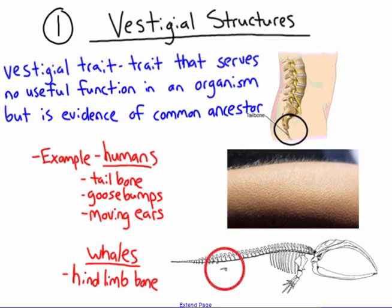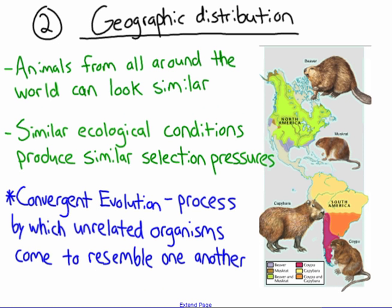Vestigial traits in humans that serve no purpose include: the tailbone, which extends past our vertebrae and serves no function; goosebumps, which you get when scared or cold but serve no purpose; and the ability to move your ears, which also serves no purpose. Our common ancestors had these traits and they had a purpose, but as we've advanced we no longer need them. Whales are another good example — they actually have a hind limb bone because they used to be terrestrial, even though you don't see hind legs on whales today.